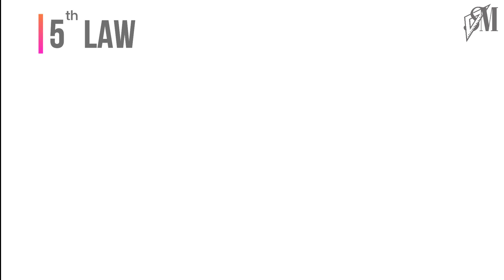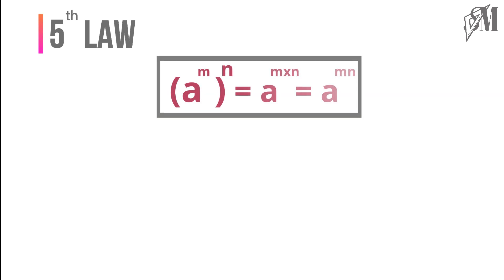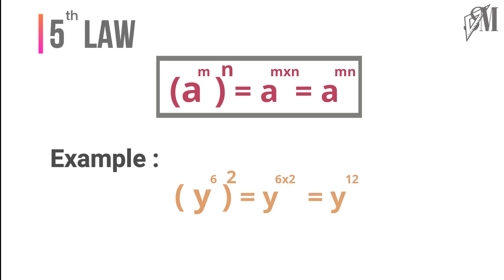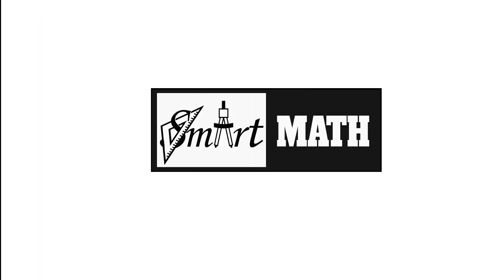The fifth and last law is for power of a power: if any power is raised to another power, the answer is the same base raised to the product of the indices. That is, (y⁶)² = y^(6×2) = y^12. I hope I made myself clear regarding the laws of indices and their applications. See you with another Smart Math clip — until then, goodbye!